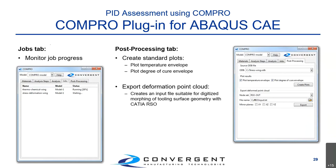Once the job is done, you go to the Post-Processing tab where you can perform two tasks. First, you can create a plot giving you the temperature envelope and degree of cure envelope of your simulation — quite important for thermal assessment of your manufacturing process. Second, for the deformed shape of your part, you have the option to export the deformed shape to a point cloud that can be imported back into CATIA for tool compensation.